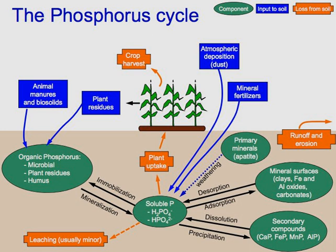Phosphorus occurs most abundantly in nature as part of the orthophosphate ion PO4³⁻, consisting of a P-atom and 4 oxygen atoms. On land most phosphorus is found in rocks and minerals. Phosphorus-rich deposits have generally formed in the ocean or from guano, and over time, geologic processes bring ocean sediments to land. Weathering of rocks and minerals releases phosphorus in a soluble form where it is taken up by plants and transformed into organic compounds. The plants may then be consumed by herbivores and the phosphorus is either incorporated into their tissues or excreted. After death, the animal or plant decays, and phosphorus is returned to the soil where a large part of the phosphorus is transformed into insoluble compounds.